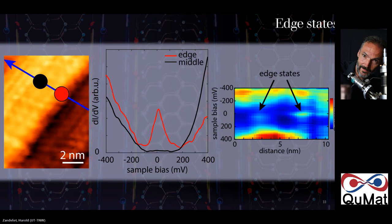A final question noted an asymmetry in the edge-state energy in the nanoribbon data. The reason is not yet clear; the nanoribbon results still require further analysis. One observation is that when nanoribbons become very narrow, the edge states from both sides hybridize and disappear, leaving only end states at the terminations of the nanoribbon. The session concluded with thanks to the guest speaker for a nice and clear presentation.